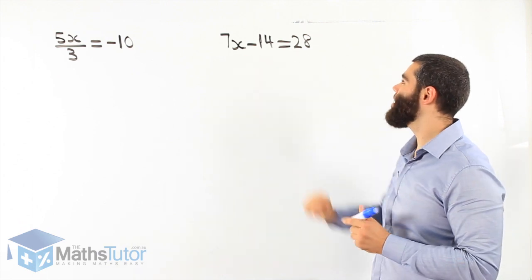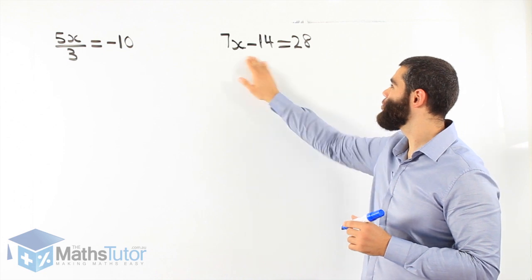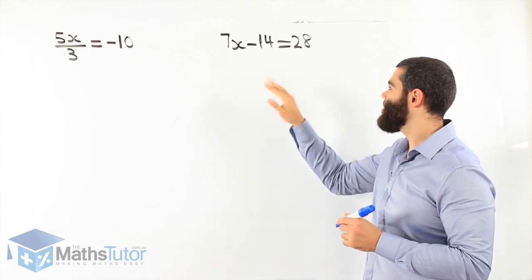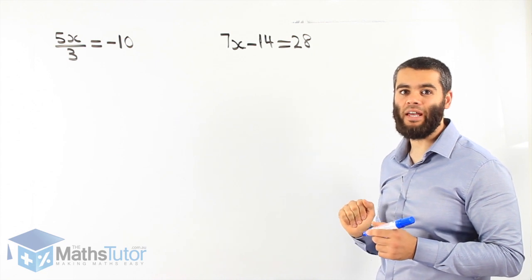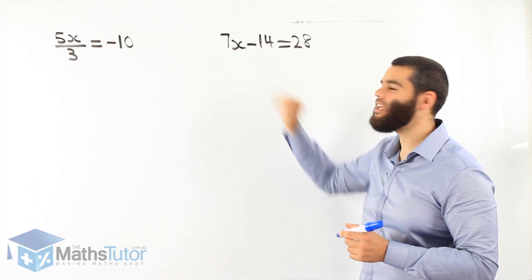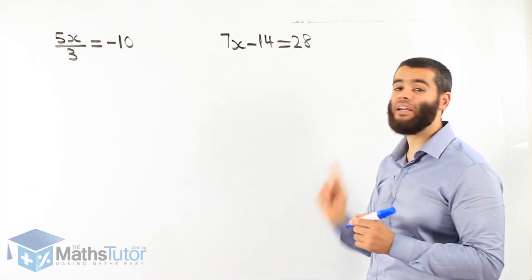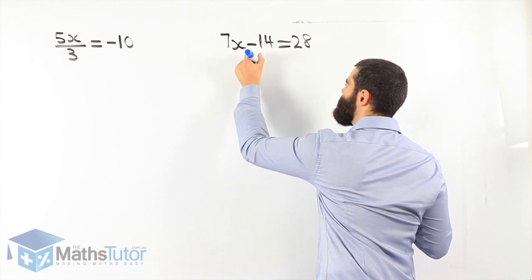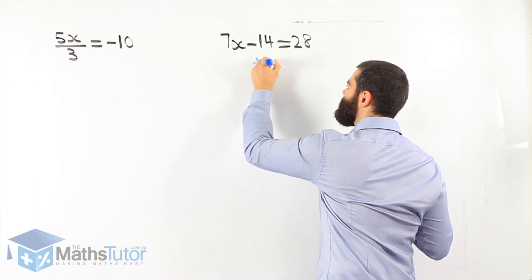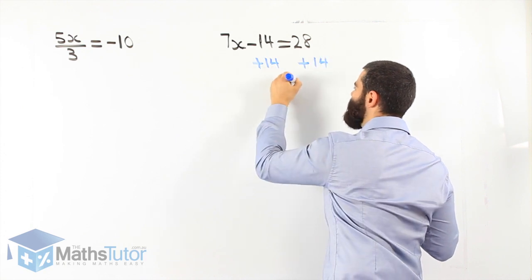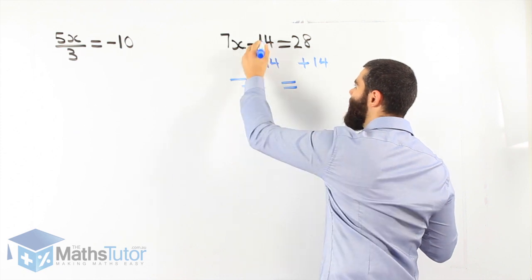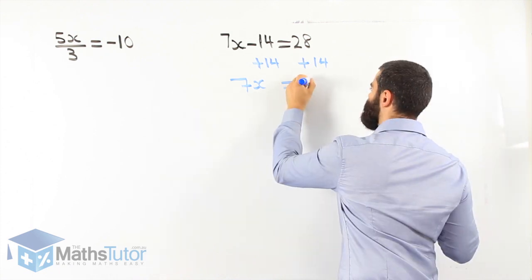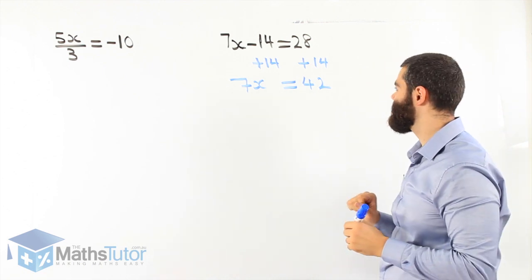Alright, two more examples. 7x minus 14 equals 28. We have a two-step equation again — we have two numerals on the left-hand side where the x is. We have to get rid of both numerals and leave x by itself. Which one do we start with first? The furthest one away from x. Which is further — 7 or negative 14? Negative 14 is further. So minus 14 becomes plus 14, and what we do to one side we do to the other. 7x is left; minus 14 plus 14 is gone. 28 plus 14 is 42, so 7x equals 42.